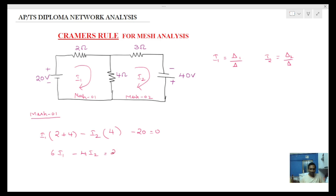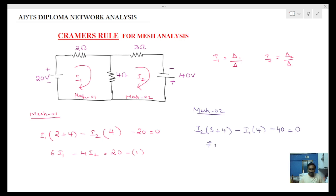For mesh 2, i2 is equal to (3 plus 4). i2 involves i1 as well — the 4 ohms term gives i1 into 4 ohms, so minus i1 into 4. The first equation touches the sign at minus 40, so minus 40 is equal to 0. This simplifies to 7i2 minus 4i1 equals 40.